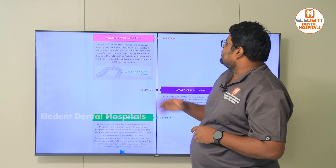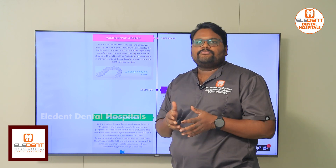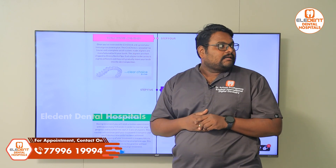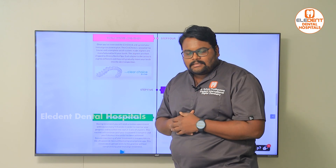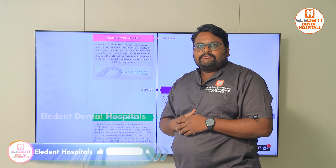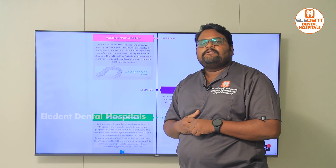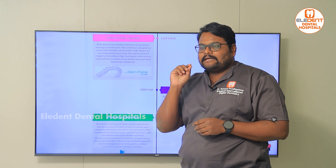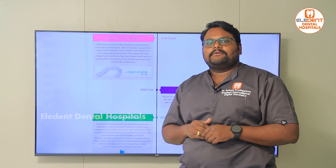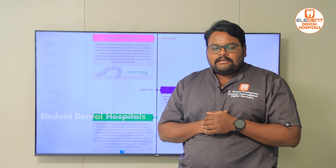The fourth step is the delivery of your aligners. The Invisalign company manufactures all the aligners after we approve your treatment on the ClinCheck, and sends them to us in at least around three weeks. We then call you for the first treatment sitting. In this sitting we do the necessary modifications to your teeth — attachments are placed on your teeth, and IPRs (interproximal reductions) are done, where we reduce a little bit of tooth surface between teeth to create space for tooth movement.